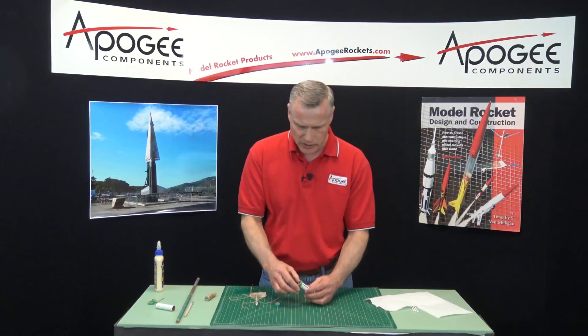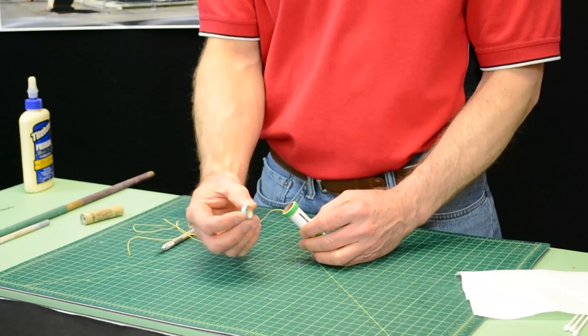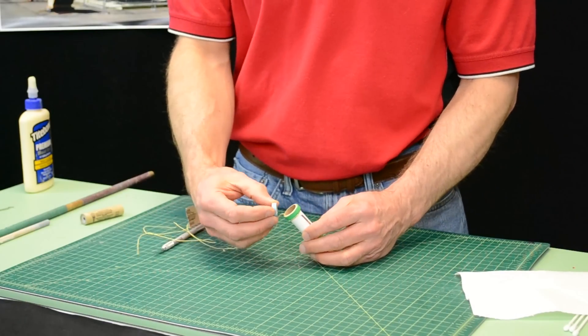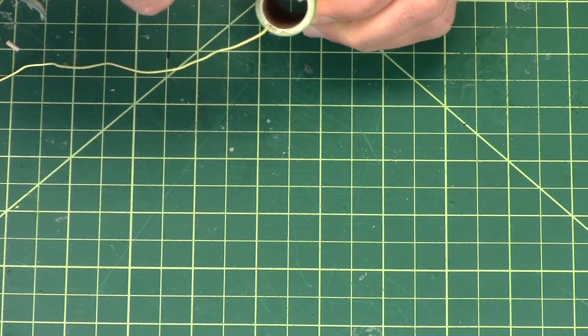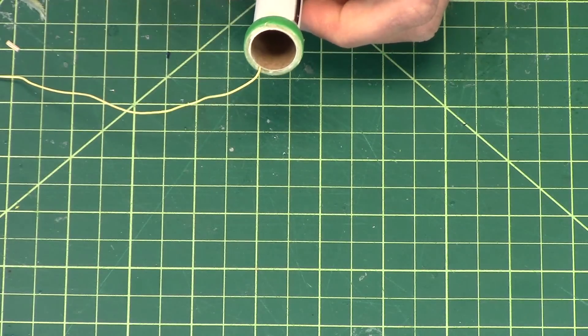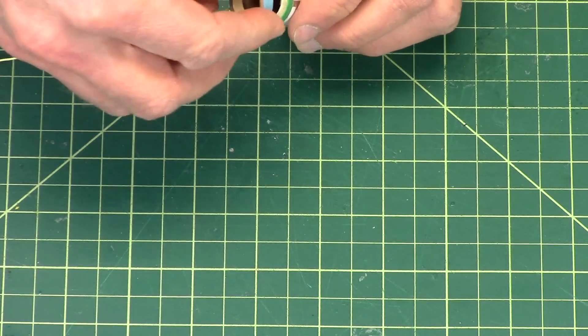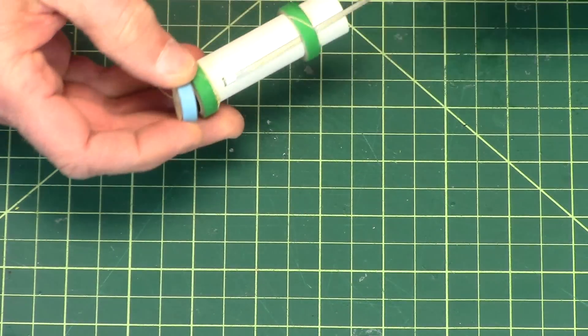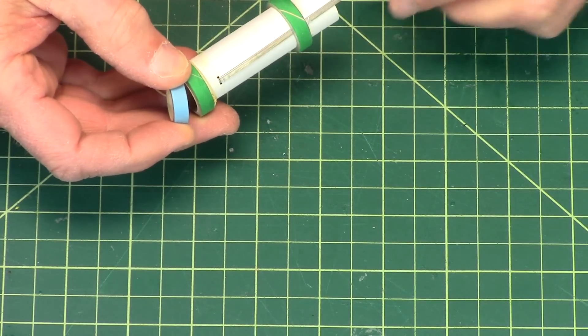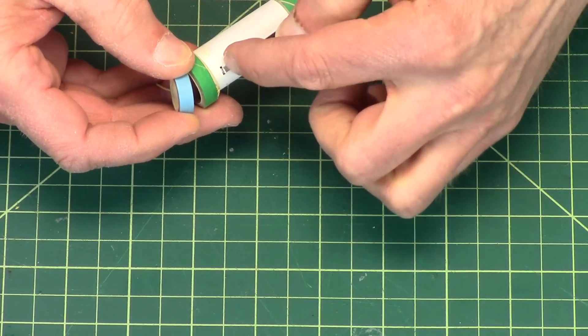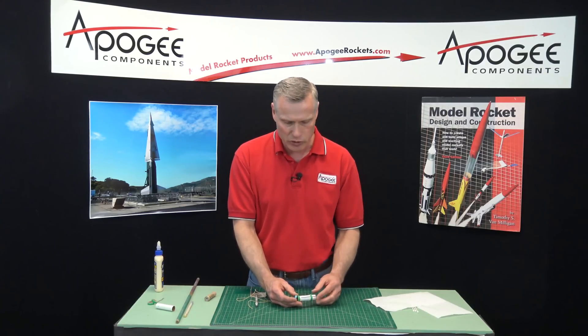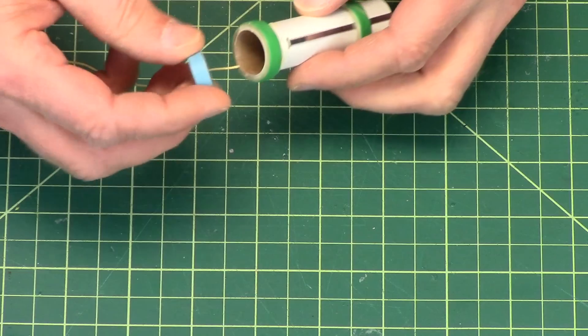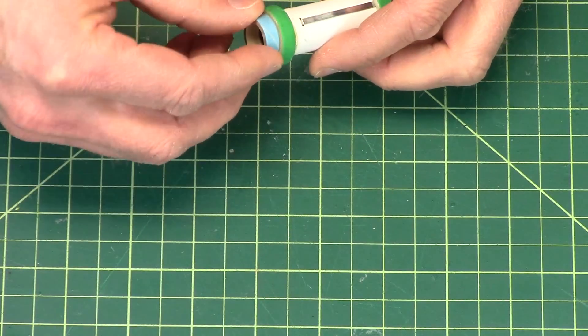Now there's one more ring. And that is this engine block ring. And that will slide into the tube and butt up against the part of the engine hook that protrudes inside the tube. And what this ring does is it prevents this metal hook from sliding forward. Because it could slide down and then into the rocket, allowing the rocket motor to move in the tube. So I'm going to glue that ring into there.